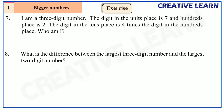This is a three-digit number, so we draw three boxes. This is the units place, this is the tens place, and this is the hundreds place. The digit in the units place is seven, so we write 7 in the units place. The digit in the hundreds place is two.